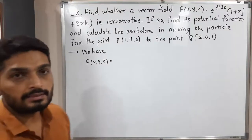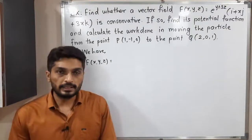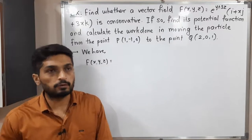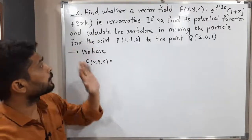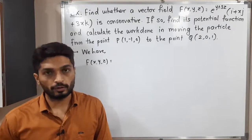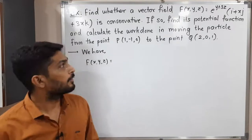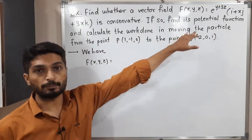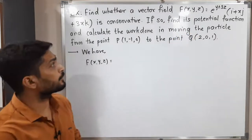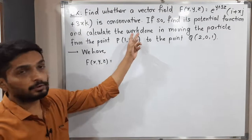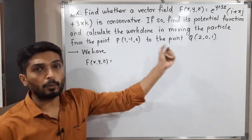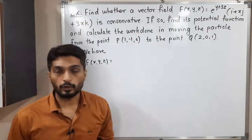Hi everyone, let us discuss this example. We have a vector field and several questions. First, we have to check whether the given field is conservative or not. If it is conservative, we have to find the potential function. After finding the potential function, we have to find the work done in moving the particle from point P to point Q.